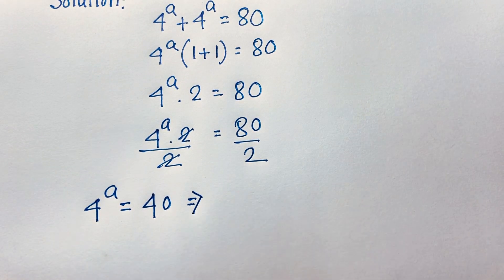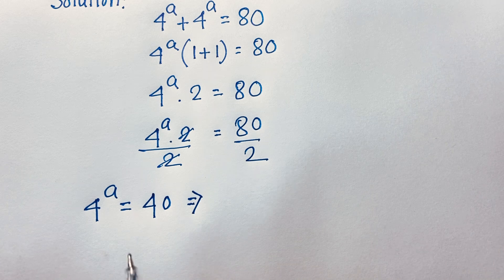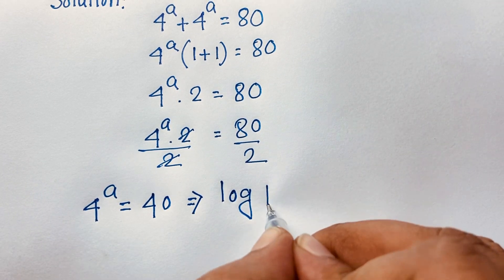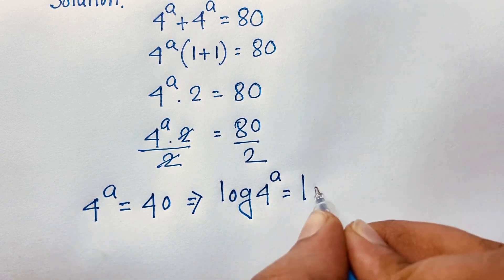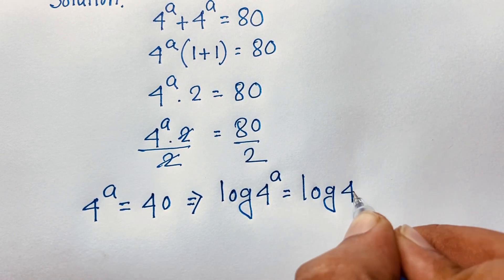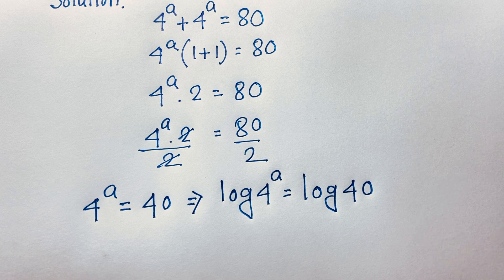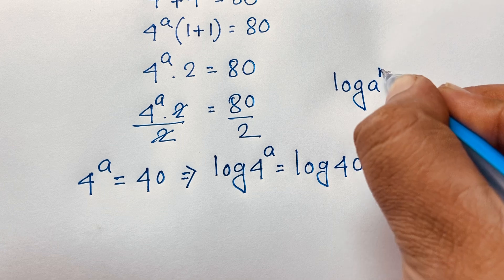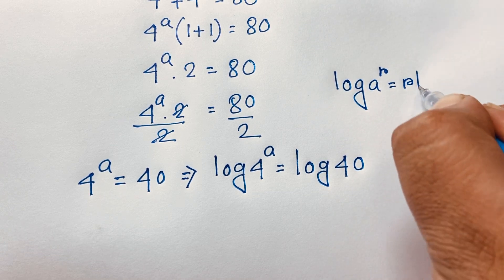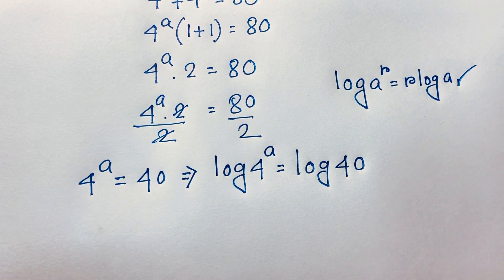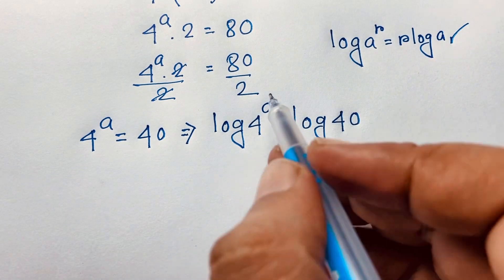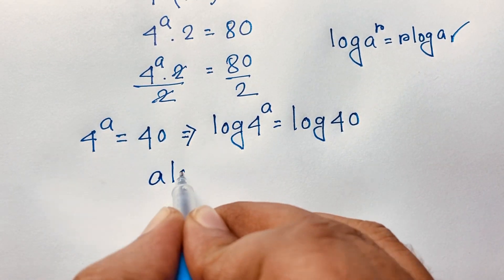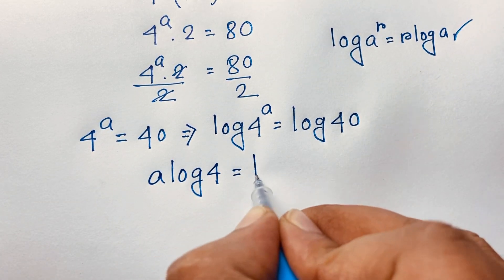Now at this moment, we will find out the value of A. So I apply logarithm to both sides: log of 4 to the power A is equal to log 40. Using the log power rule — log A to the power R equals R times log A — the exponent moves to the front. So it will be A times log 4 is equal to log 40.